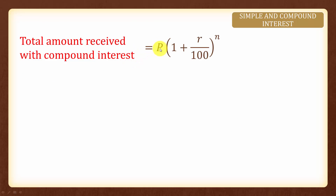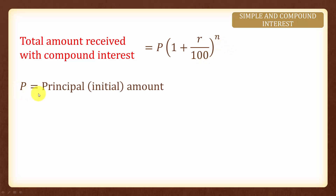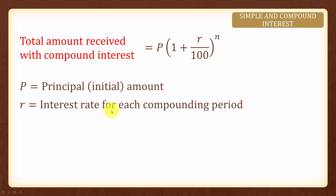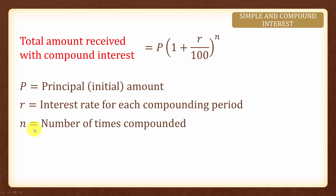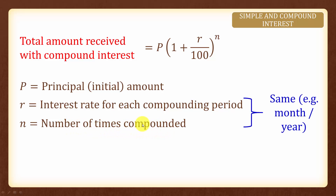The formula is P multiplied by (1 + R over 100) to the power of N, whereby P is the principal or initial amount, R is the interest rate for each compounding period, and N is the number of times that the amount is compounded. If N is in months then the interest rate must be per month as well, and likewise for years. It is important to note that N must be a natural number greater than one.